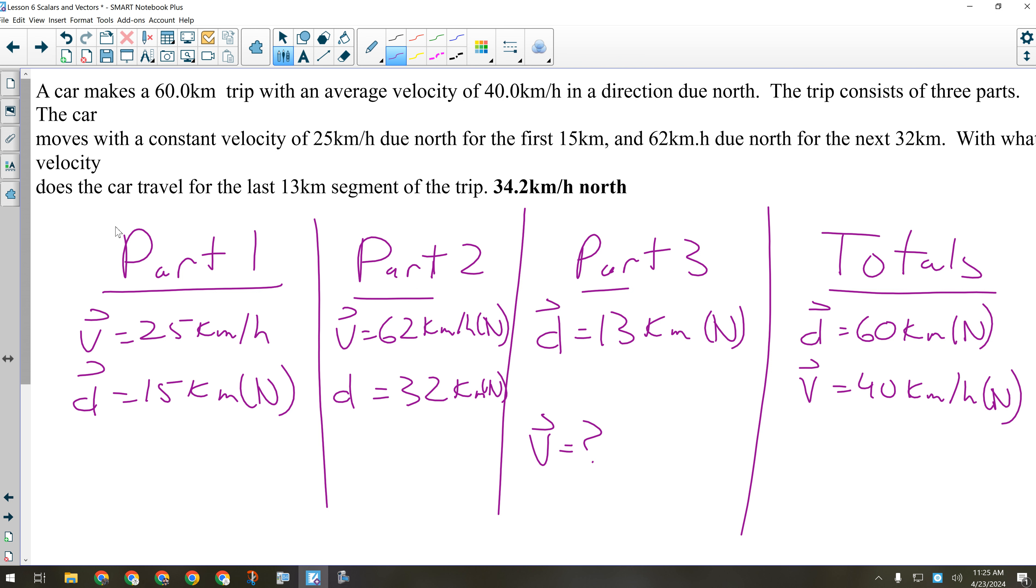What am I missing in order to get that? Yeah, I need the time for part three. Now, it just so happens, I don't have the time for anything in this question. I have the same information for all the parts except part three. I have D and V. Can I get T? Yeah, for all the parts actually. So I'm going to start with the totals. Time equals D over V. That's going to be 60 over 40. So this whole trip takes one and a half hours. I can find the time for part one. T equals D over V. 15 kilometers divided by 25 kilometers per hour should give me 0.6 hours.